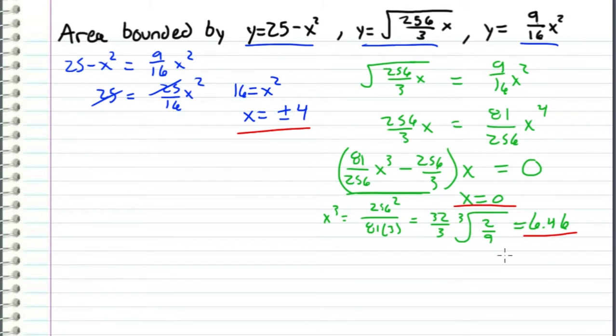We still have another set of functions to look at. So now let's take a look at 25 minus x squared, and let's set this equal to the square root function 256 over 3x. We're finding the intersection of these two functions. So like we did in the previous one, we just square both sides to get rid of this square root. So we get 25 minus x squared quantity squared equals 256 over 3x.